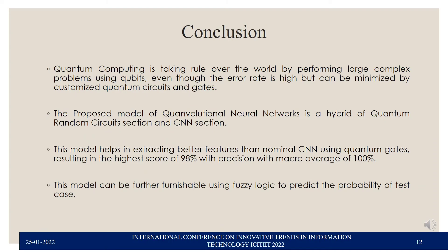In conclusion, quantum computing is increasingly powerful for large complex operations using qubit mode. Although the error rate is currently high, it can be minimized using customized quantum circuits with appropriate gates. This proposed hybrid quantum-classical CNN model extracts better learned features than a normal classical CNN, achieving a highest precision score of 98% with a macro average of 100%. Future work can incorporate fuzzy logic to predict the probability of test cases. Thank you.